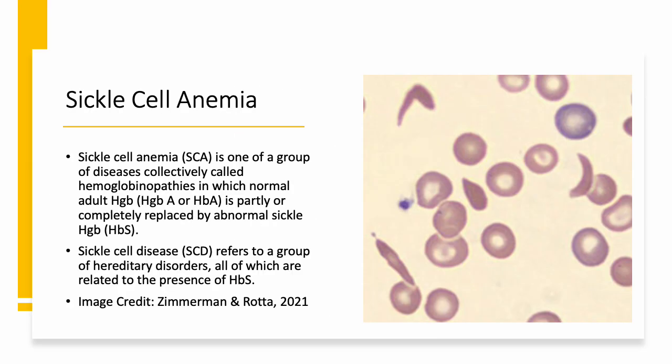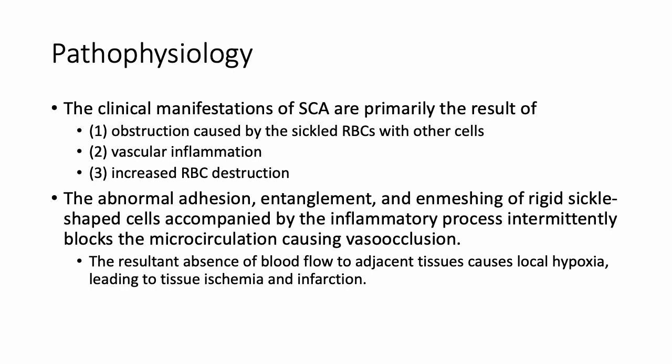Next, we're going to talk about sickle cell anemia. Sickle cell anemia is one of the diseases in a group called hemoglobinopathies, which basically just means that there's something wrong with your hemoglobin. In sickle cell, you're born with a genetic trait that when your body is under stress, these hemoglobin can sickle and collapse and break apart. When all of these cells collapse and break apart, they tend to get stuck in blood vessels, and that's what we call a vaso-occlusive crisis.